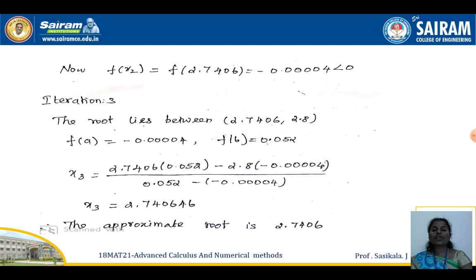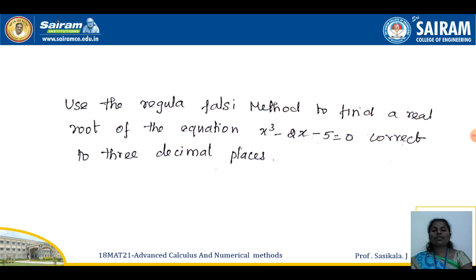Since f(x₂) is also negative, we replace a with x₂, so the root now lies between 2.7406 and 2.8. Substituting into the formula gives x₃ = 2.740646. Comparing x₂ and x₃, the 4-decimal value 2.7406 matches. Therefore, the approximate root of the given equation is 2.7406.